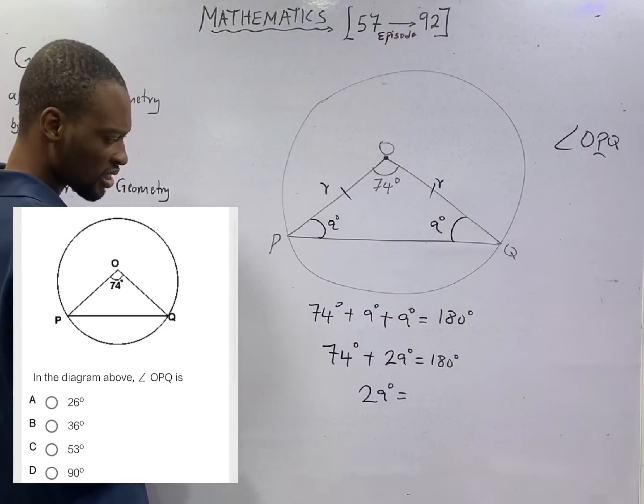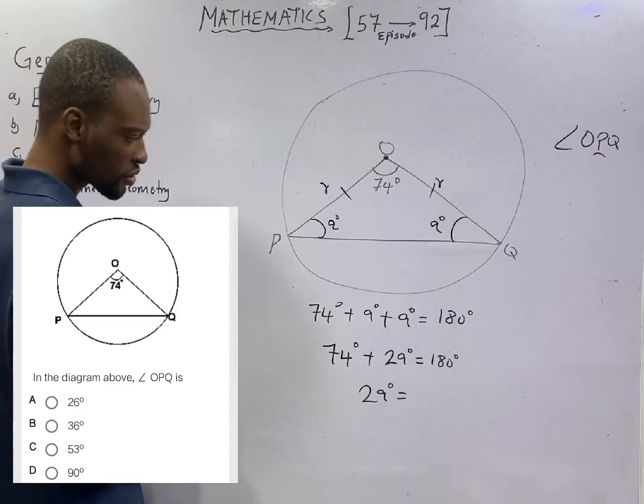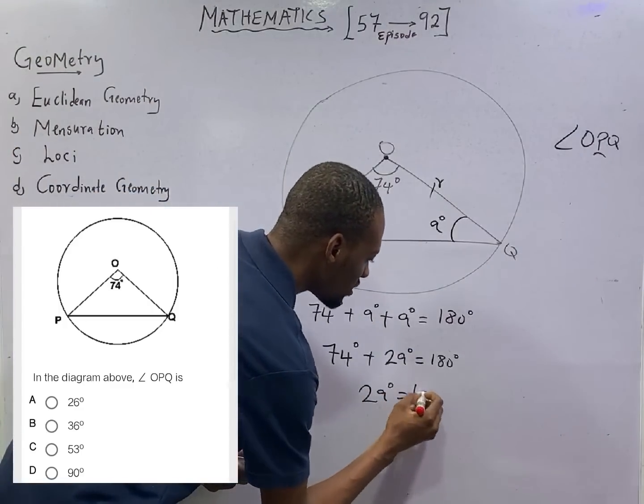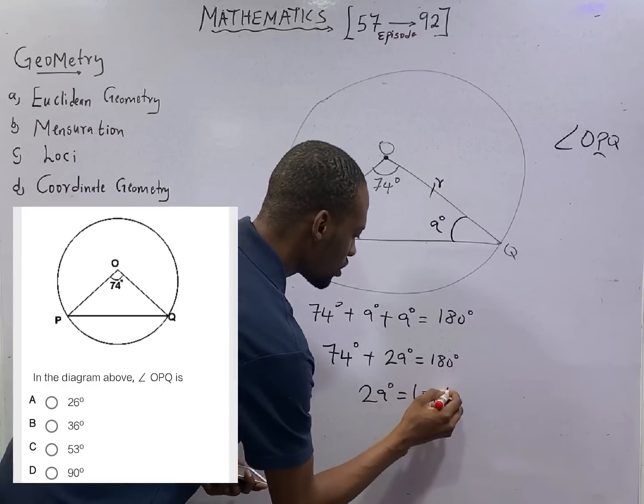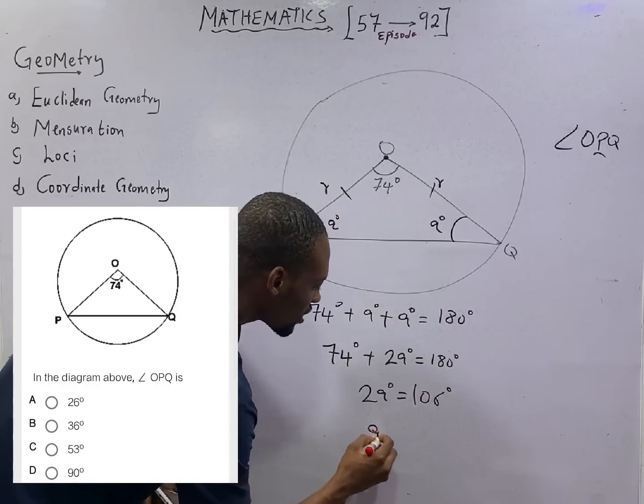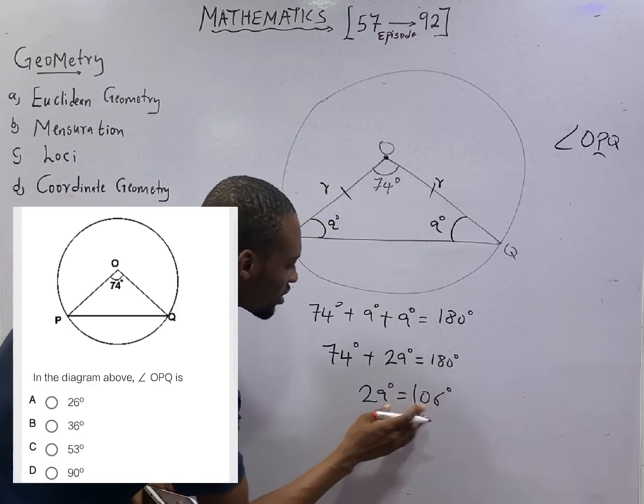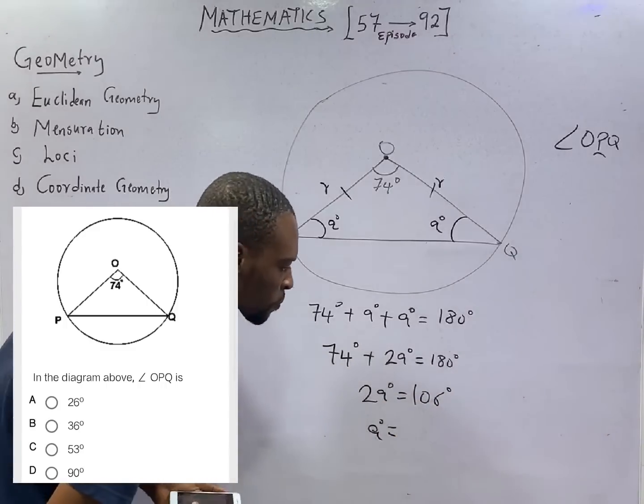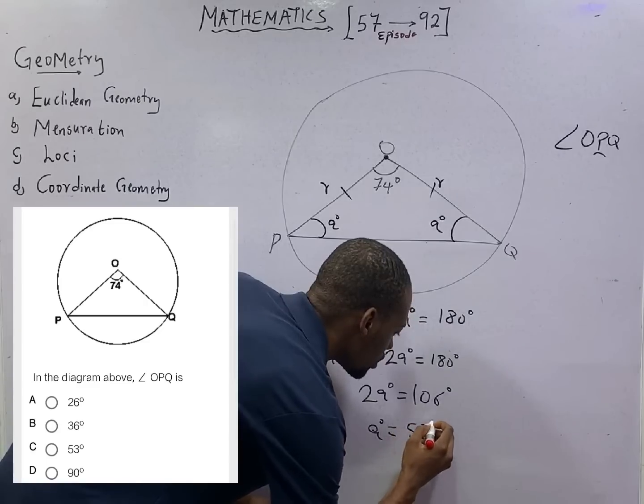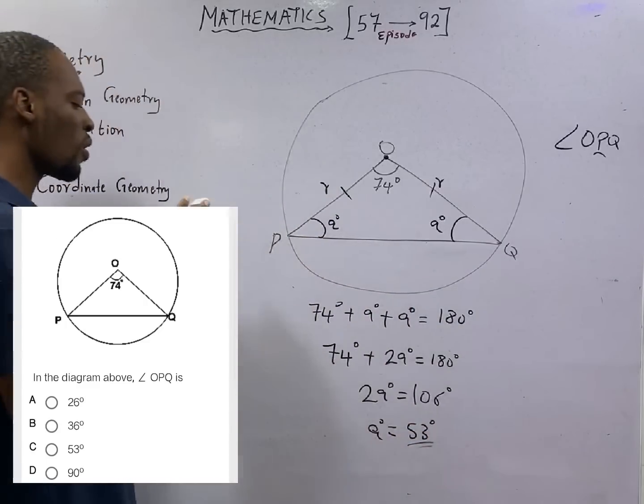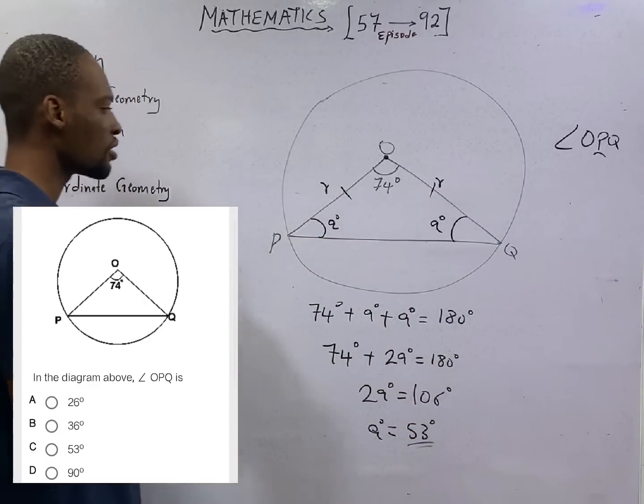Ladies and gentlemen, that should give us 106 degrees. So to get the A degrees, we divide both sides by 2. 106 divided by 2, that should give us 53 degrees. So the value of A is 53 degrees.